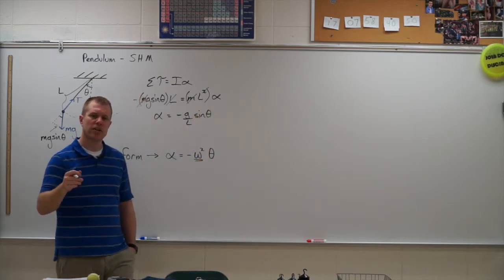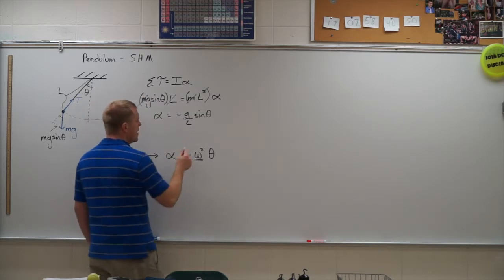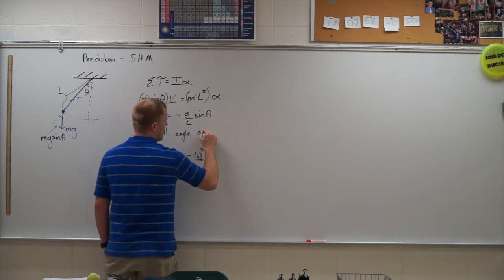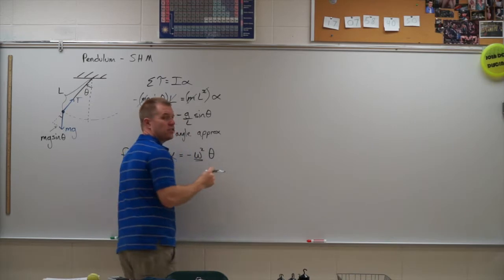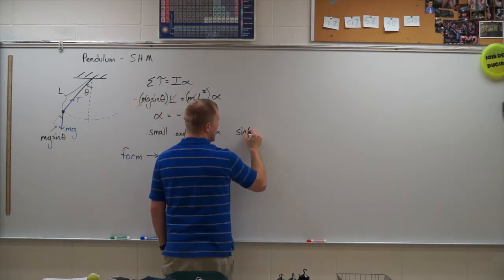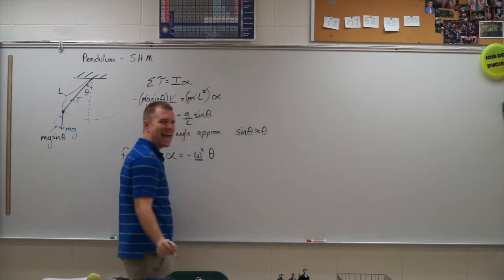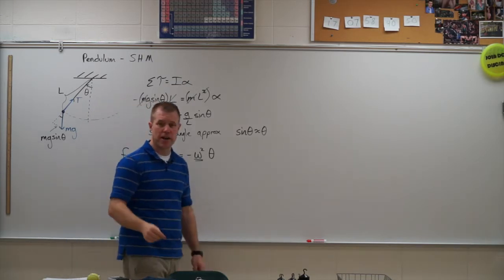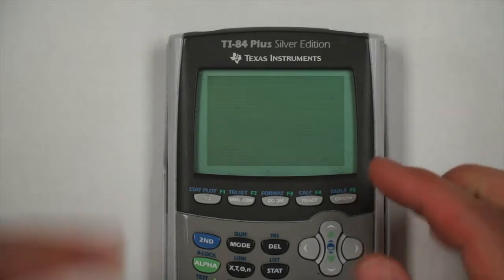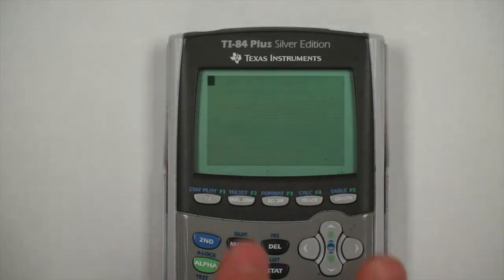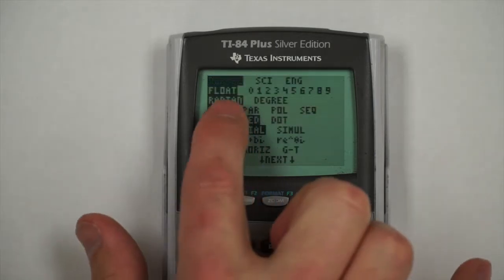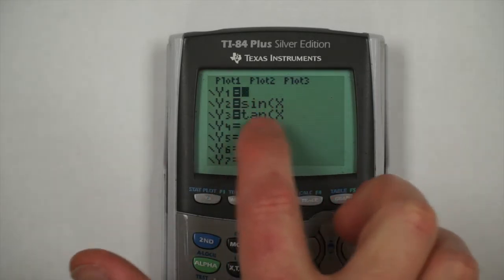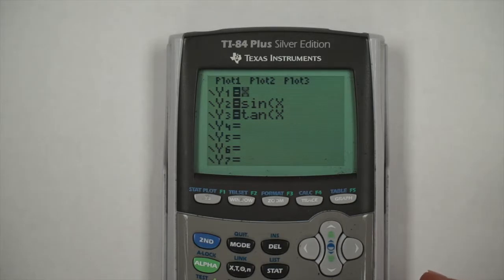Now we do have to make something called a small angle approximation here. The small angle approximation says that as long as my angle is measured in radians, the sine of the angle is approximately the same as the angle in radians. I'm going to show that to you in your calculator, so let's flip over to the calculator now. I'm going to give you a little bit more information about that small angle approximation. So in order to show this, what we've got to have is we've got to have our mode in radian mode.